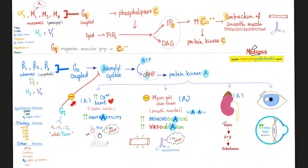G-I coupled receptor is the exact opposite: it inhibits adenylate cyclase, inhibits the conversion of ATP to cyclic AMP, decreases protein kinase A — resulting in no cardiac contractility, no smooth muscle relaxation, no renin, and no aqueous humor.